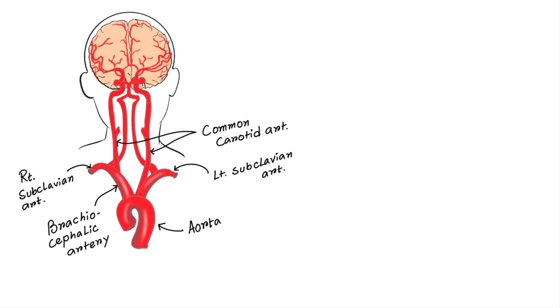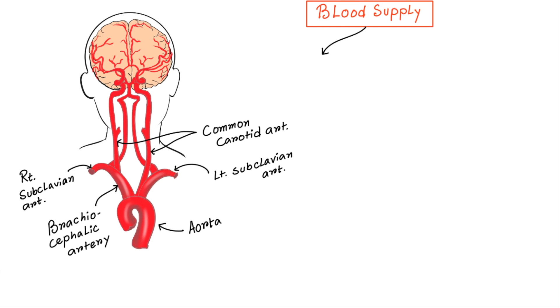Parallel to this common carotid arteries, two arteries are going up. They are vertebral arteries. Now blood is supplied to the brain by two systems. Carotid system and vertebro-basilar system. We will discuss one by one.